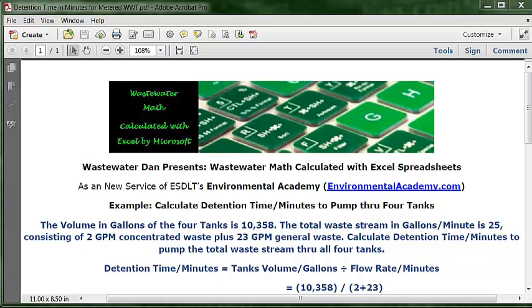That's why we're going to use 23 plus 2, or 2 plus 23, which would be the same as 25. But because we were given the flow rate of the two waste sources, I simply put the two waste sources in the formula so that we can see how it will work using the two individual waste streams.